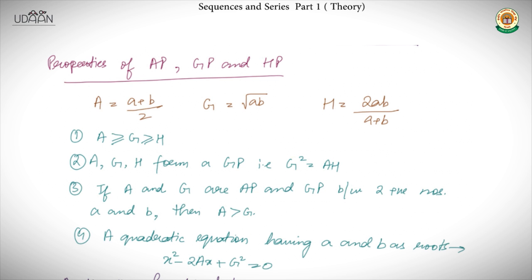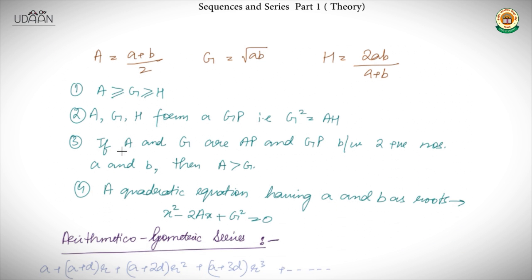Equality in AM ≥ GM ≥ HM holds when both numbers are equal. Then, if there is a quadratic equation having a and b as roots, where A is the arithmetic mean and G the geometric mean, the quadratic can be written as x² − 2Ax + G² = 0. This is clear from the properties of quadratic equations: the coefficient of the middle term is the sum of roots (= 2A), and the constant term is the product of roots (= G² = ab).